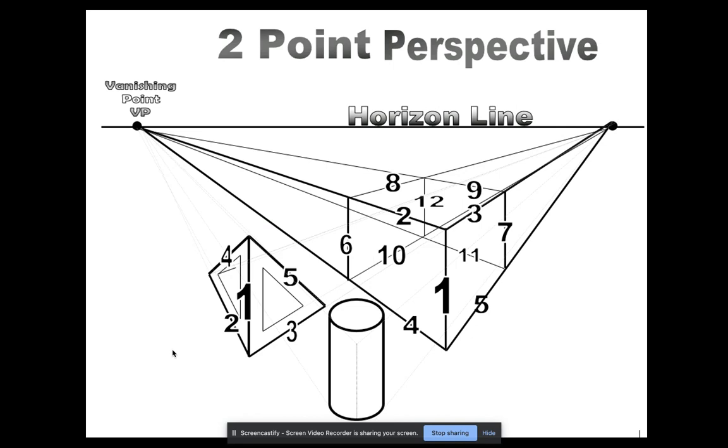The first thing I want you to do is open up to a clean page in your sketchbook and place your sketchbook horizontally. Then put your horizon line in the middle of your paper with two vanishing points on either side of the horizon line.